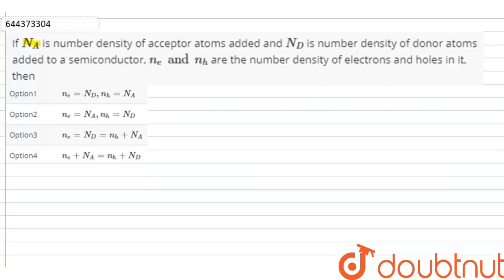The question is if Na is the number density of acceptor atoms added and ND is the number density of the donor atoms added to the semiconductor,